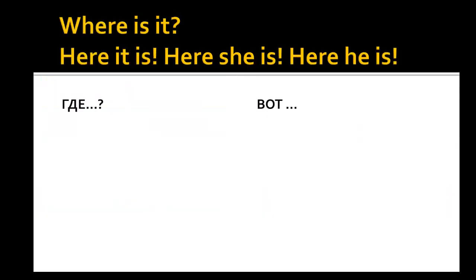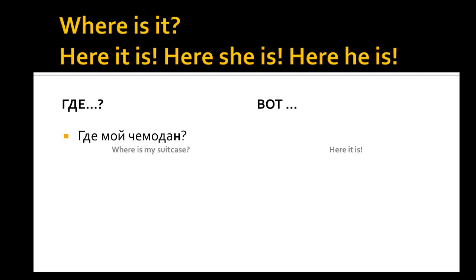Let's see how it works in phrases. Imagine you want to ask, 'Where is my suitcase?' and someone will come to the rescue and say, 'Here it is.' In Russian it will sound the following way: Где мой чемодан? The word чемодан ends in a consonant, which means it's masculine — note that we are using the masculine form МОЙ here. Since this word is masculine, we'll use the masculine pronoun Он in the answer: Вот он.